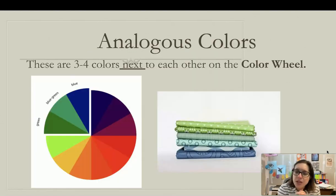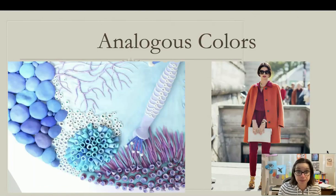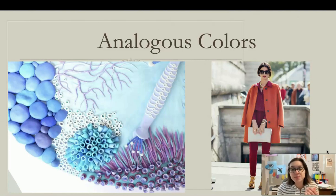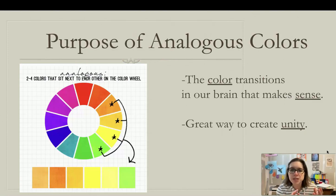Our next color scheme is called analogous colors — three to four colors next to each other on the color wheel. We often see analogous colors used in art because it's pleasing to the eye. We often see it in clothing too, as the color transitions make sense. It's a great way to create visual unity.